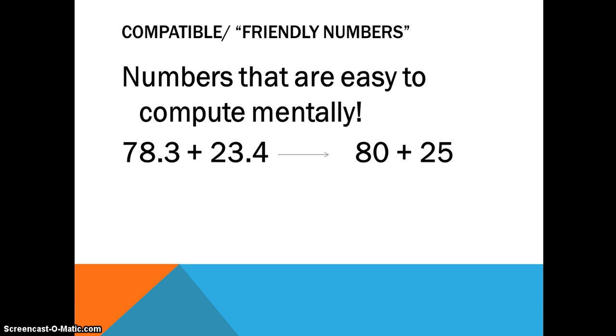It is 105. After I do this compatible numbers answer, I do want to go back and review my actual answer just to check to make sure that my estimate is reasonable. It is, because the answer to 78 and 3 tenths plus 23 and 4 tenths is 101 and 7 tenths.